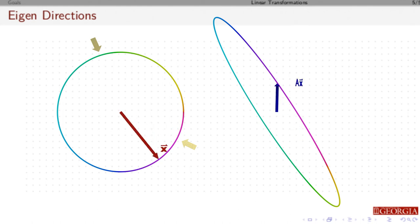If I go back to the other direction, given that x, a times x, again, it's in the same direction, but it's flipped 180 degrees and stretched out a little bit.